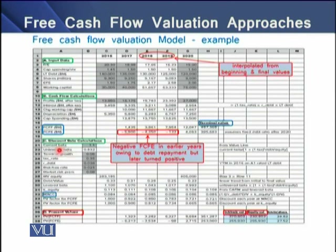In Panel C, we determine the discount rate, which is the company's WACC. For determining the discount rate we use the CAPM model. For that we have the company's current beta, its unlevered beta, terminal growth rate, tax rate, rate of debt (interest rate), risk-free rate, market risk premium, market value of equity, debt value, levered beta, and the resulting WACC.